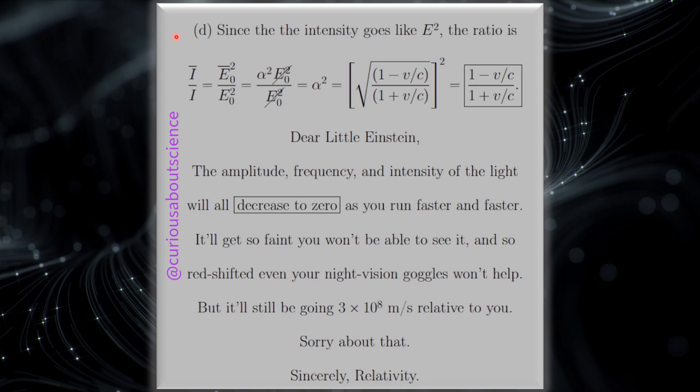Finally, in part D though, we have, since the intensity goes like E squared, the ratio is I bar over I is E naught bar squared over E naught squared. And we see that we get an alpha squared pickup there, and we can cancel the E naughts there. Boom, boom. We like that. And then we're just left with alpha squared, which we saw what that was. Again, that's 1 minus V over C, 1 plus V over C. So that's pretty cool to see, man. That's pretty cool.